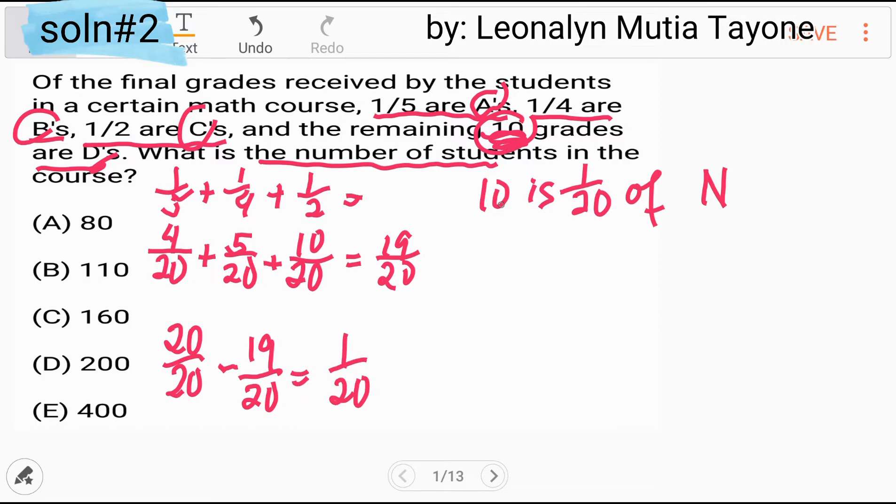That is 1 over 20. Yan yung equivalent dito sa sampung estudyante. Yung sampung estudyante, yan yung 1/20 sa kabuuhan ng mga estudyante. So 10 is 1/20 of N. Let N be that yung number of students. Kopyahin si 10. Ang is equals yan siya. 1 over 20 ang of multiplication N.